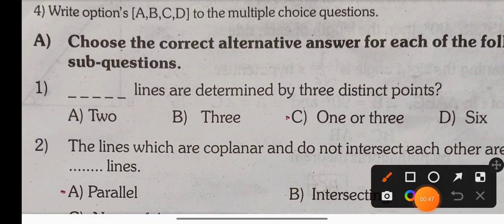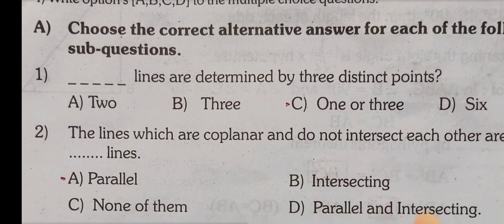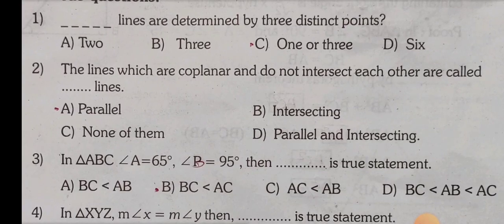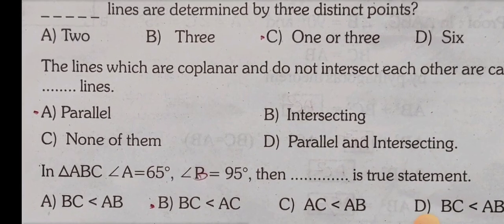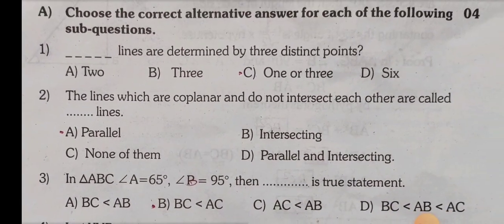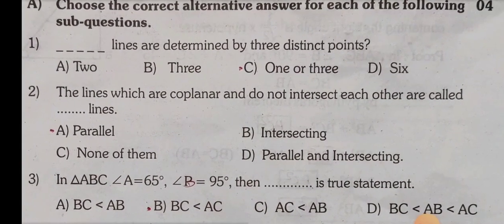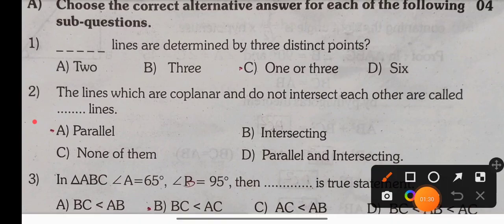One or three lines are determined by three distinct points. Next question: the lines which are co-planar and do not intersect each other are called dash lines. Options are: parallel, intersecting, not, none of them. The correct option is A: parallel. Lines which are co-planar and do not intersect each other are called parallel lines.